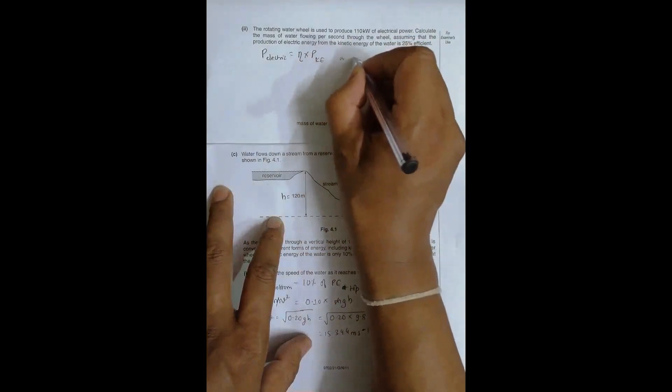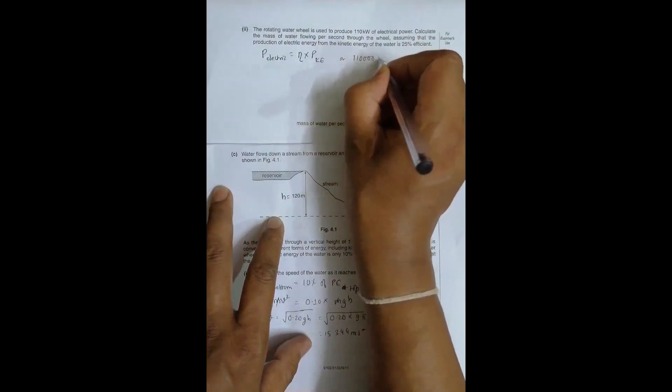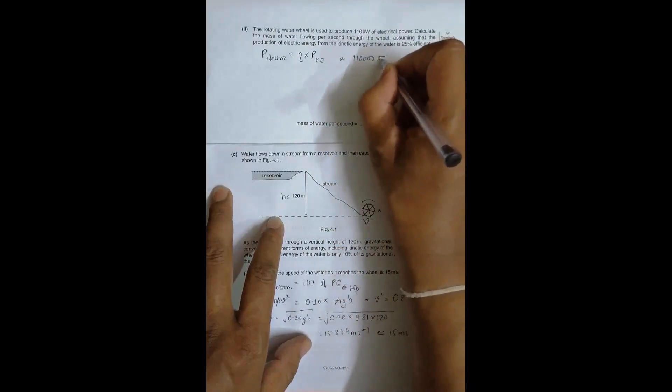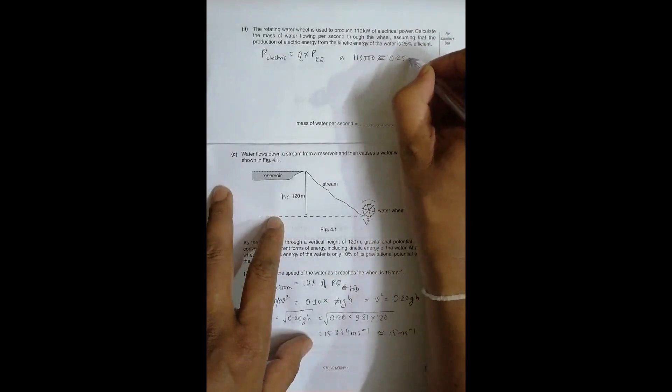So this thing is equal to, electric is equal to 110 kilowatt, so it is 110,000 into efficiency is 25%, so it is equal to 0.25. And the power due to KE is equal to, into,